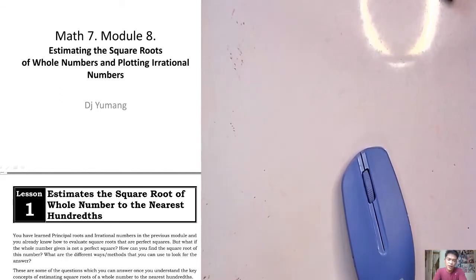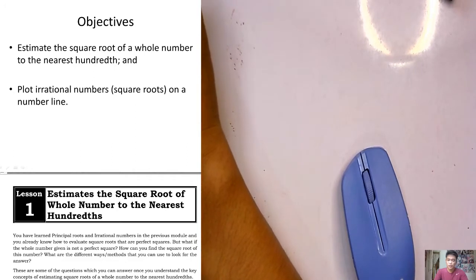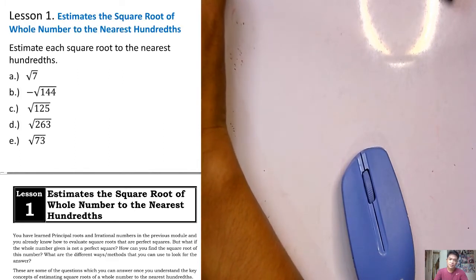Good morning everyone. So today, I'll be teaching you module number 8 of Mathematics 7, which talks about estimating the square roots of whole numbers and plotting irrational numbers. Lesson number 1 is entitled Estimates the Square Root of Whole Number to the Nearest Hundreds.